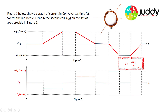Looking at the non-zero regions: a constant increase in magnetic flux in coil A induces a constant negative current in coil B. A constant negative gradient in the second section generates a constant positive current, and similarly a constant negative gradient in the third section induces a constant positive current. For the amplitude: the later sections have the same change in flux as the first but over half the time, so the gradient is twice as large. Accordingly, the induced current amplitude is double in those sections.